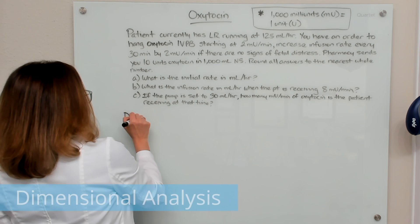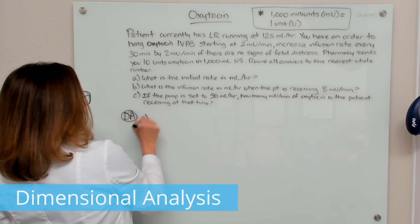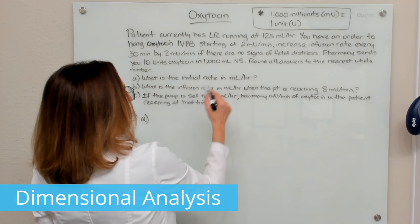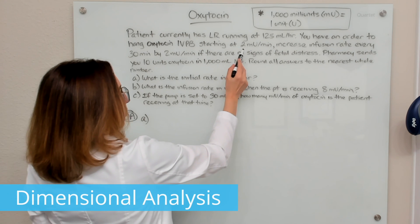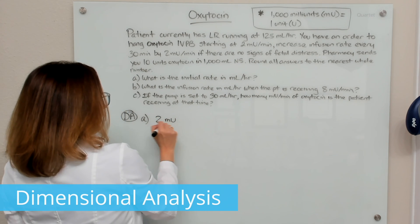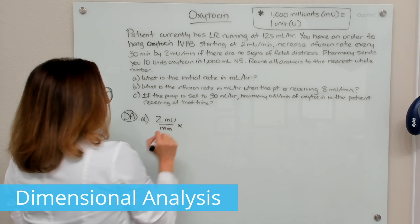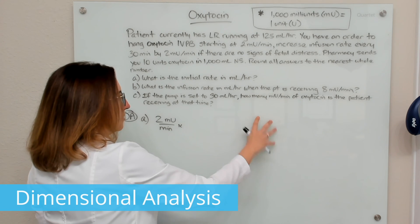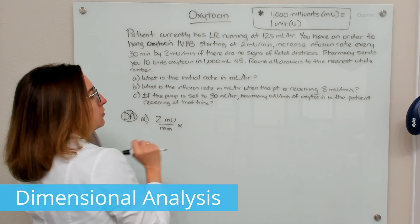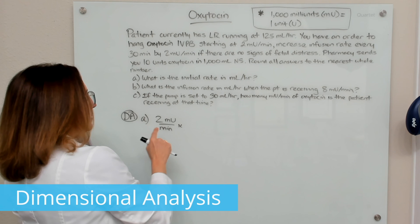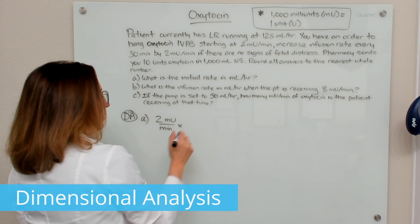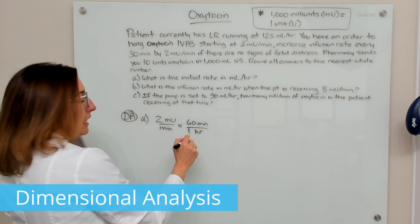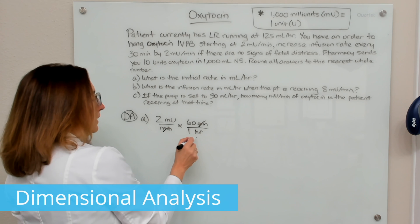With dimensional analysis, let's start with question A: what is the initial rate in milliliters per hour? We start by writing down the ordered rate, which is 2 milli-units per minute. With dimensional analysis, we keep multiplying by conversion factors to get to the units we are looking for — milliliters per hour. I need to go from minutes to hours, so I'll multiply by 60 minutes per hour, which gets me to milli-units per hour.